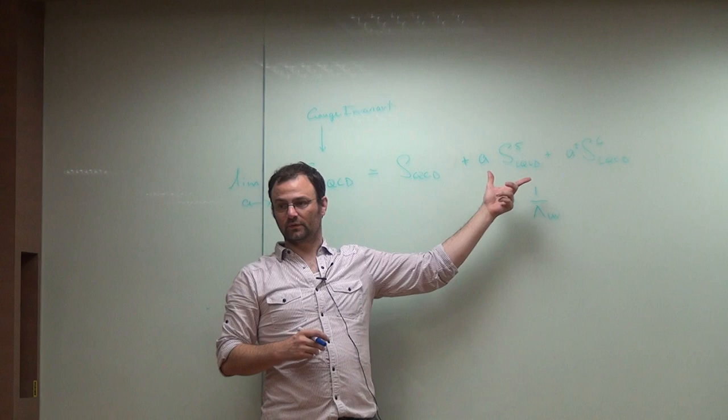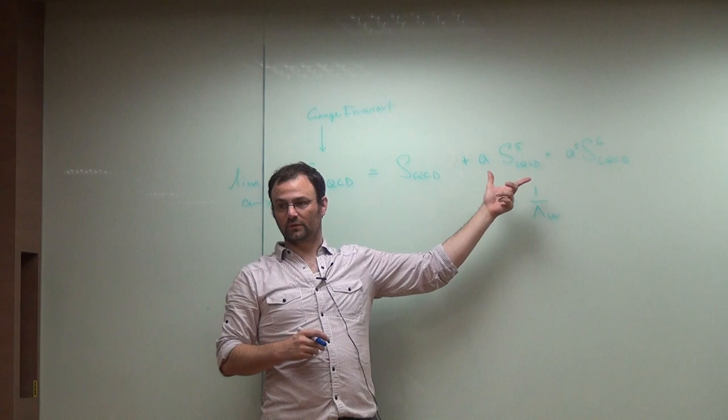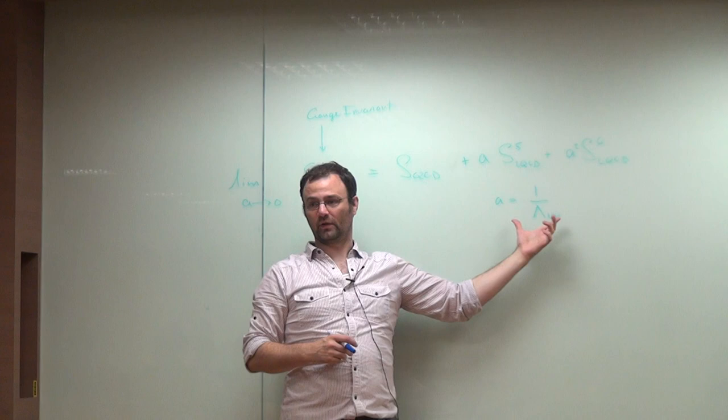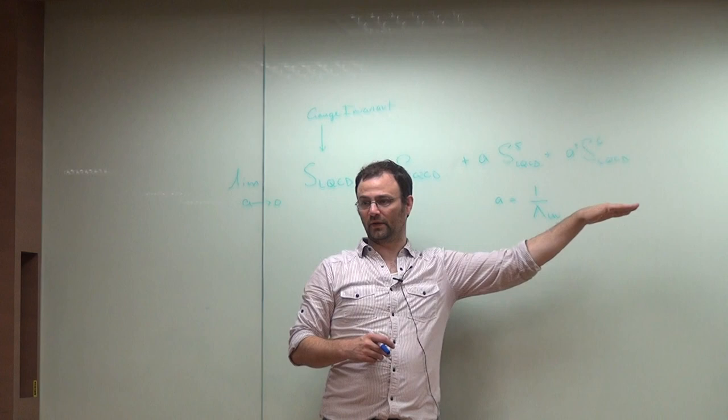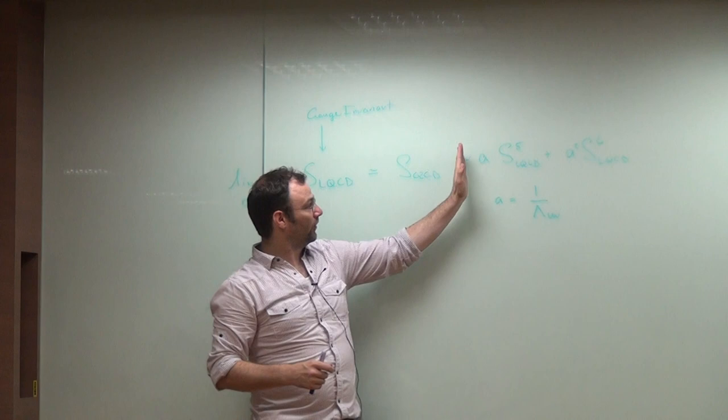So the error you're making in the computer can be described as a set of operators which are all irrelevant. So as you take the continuum limit, you take this UV to infinity, so this scale going to infinity is the same as A going to zero, all these corrections vanish.